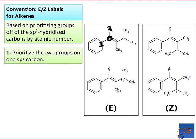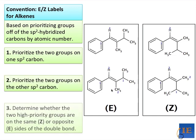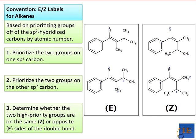We then do the same thing for the other SP2 hybridized carbon. Here both of the atoms immediately off of the double bond are carbons, but if we go one step further, the first point of difference is a hydrogen on the lower substituent and a carbon on the upper substituent. Thus, we give the higher priority to the isopropyl group and lower priority to the methyl group below. We then ask: are the high priority groups on the same or opposite sides of the double bond, similar to the question we ask in cis-trans isomerism? In the left-hand structure, the higher priority groups are on opposite sides of the double bond — this is a telltale sign of the E configuration.